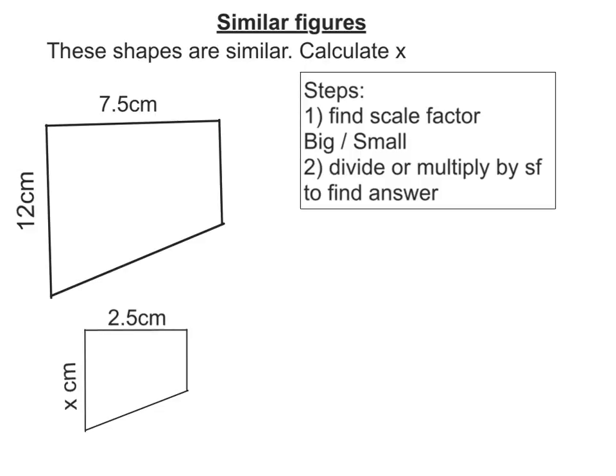In this video we're looking at similar figures and how we can work out lengths of some of the sides of these similar figures. We're going to use these steps: first, we must find our scale factor. We do that by taking two corresponding sides and doing big divided by small. Then to find the answer we either divide or multiply by the scale factor.